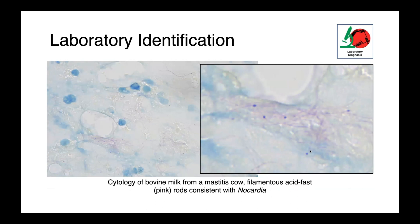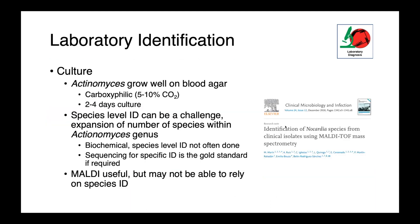Here you can see a cytology image of mastitic milk from a cow — note the filamentous acid-fast pink rods, which are consistent with Nocardia species. Culture is certainly possible with any of these organisms. Actinomyces will grow well on blood agar; however, they are carboxyphilic, so they will grow faster in an environment enriched with 5-10% CO2. Identification to the species level can be challenging with either MALDI-TOF or biochemical ID, and if you really need a species-level identification, the lab may need to do molecular work — sequencing a universal bacterial target like 16S or CPN60 would be very useful.